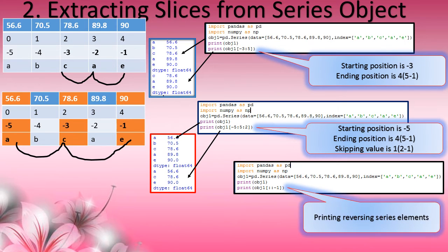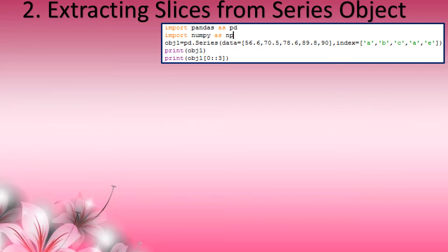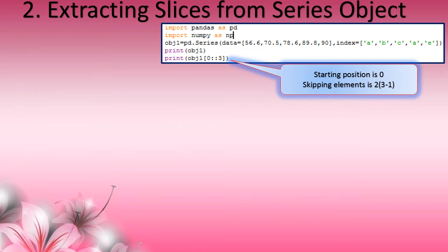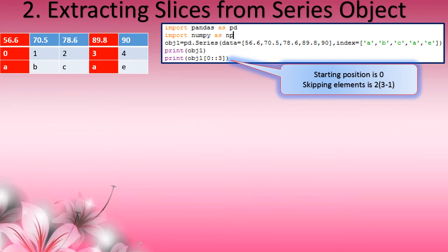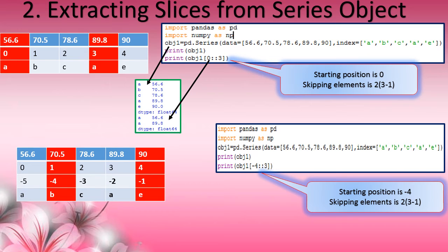When no start or stop value is given but step is minus 1, it prints elements in reverse order. Next, start value is 0, no end value, step is 3 minus 1 = 2. From the start, skip 2 values and print till the end — so first 0.56, skip 2 values, then 89.8 is printed. Similarly, starting at minus 4 with step 2 and no end — so minus 4 gives 70.5, then skip 2 values, and 90 is printed.